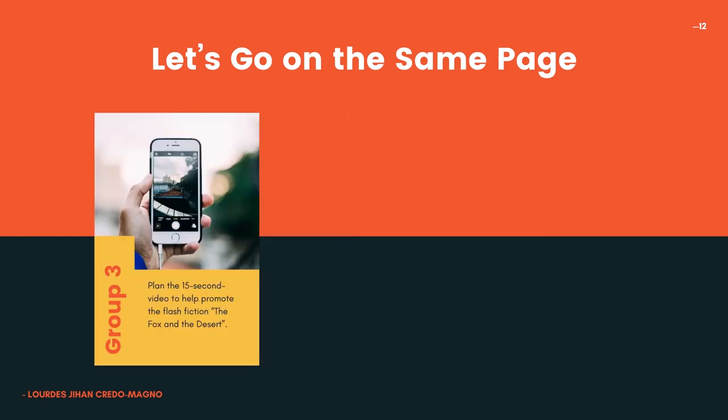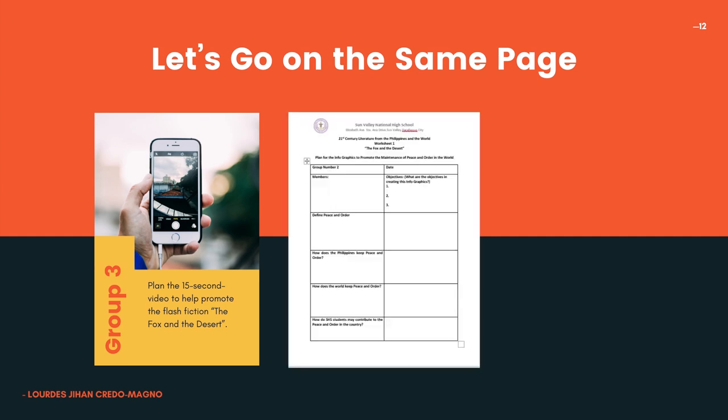Group 3: plan a 15-second video to help promote the Flash Fiction, The Fox and the Desert. In your worksheet, write your objectives for creating this 15-second video. Then write a storyline — in your storyline, think of how your 15-second video will encourage your fellow senior high school students to read this speculative Flash Fiction. Then choose a social media platform to upload it to, either TikTok or YouTube.